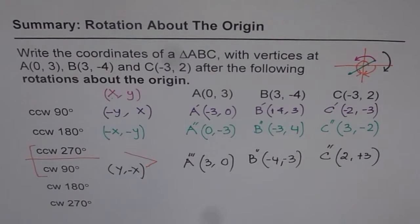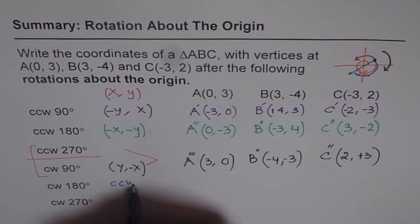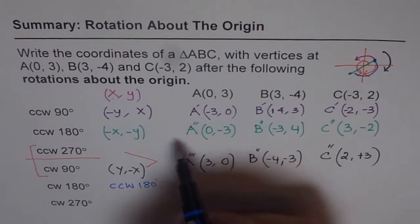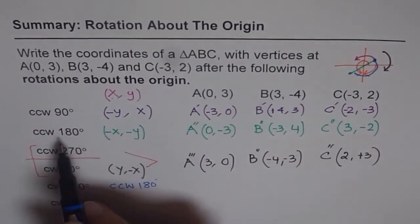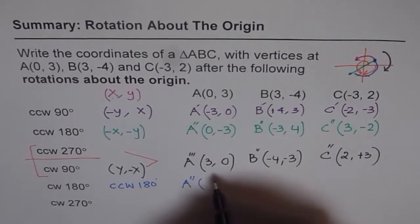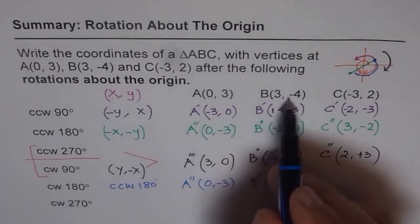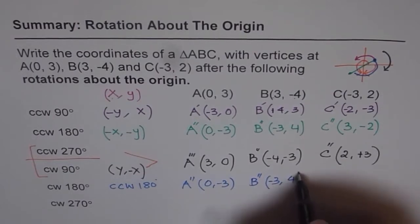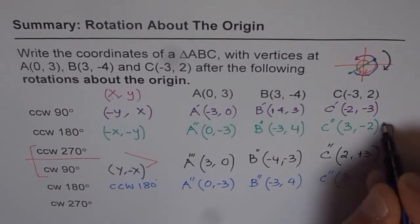Clockwise 270 is the same as counter-clockwise 90, and clockwise 180 is the same as counter-clockwise 180. For clockwise 180: a point lands right across, same as counter-clockwise 180, so signs of both X and Y are reversed. We get the same results as A double-dash, B double-dash, C double-dash: (0,-3), (-3,4), and (3,-2) respectively.